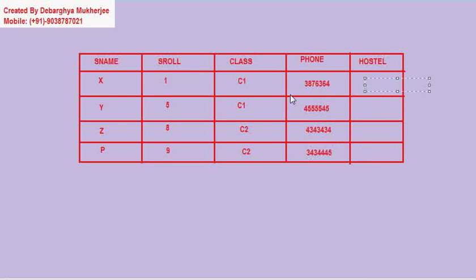This particular institution or college made one rule: if you are in class C1 then you must be in Hostel 1, and if you are in class C2 then you must be in Hostel 2.